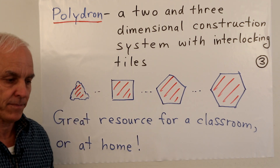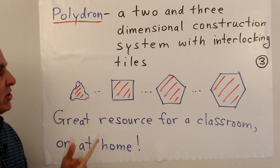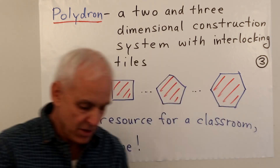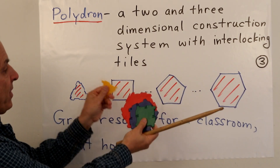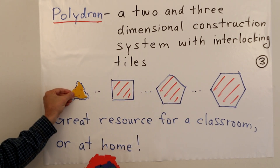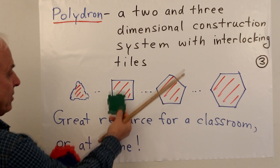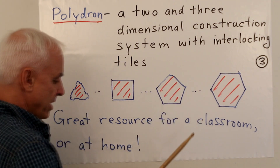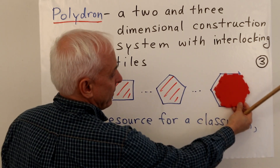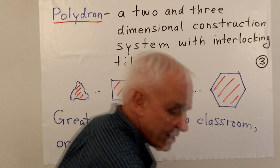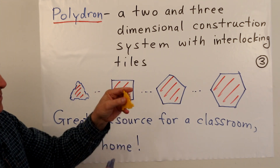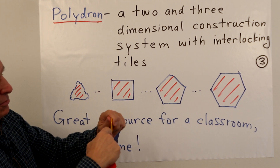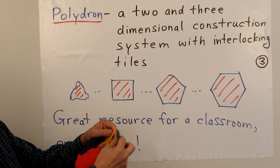Polydron is a two- and three-dimensional construction system with interlocking tiles. I have some examples here to show you. Here are some Polydron tiles: there is a triangle, here is a square, here is a pentagon, and here is the biggest one — a hexagon. These things fit together in a very pleasant way; they have little grooves that allow you to snap them together.